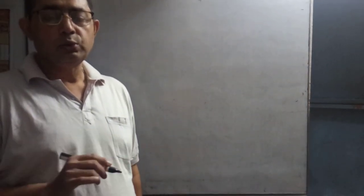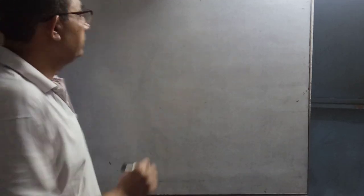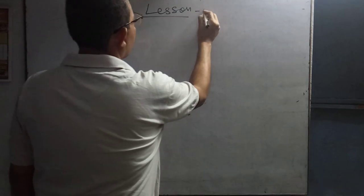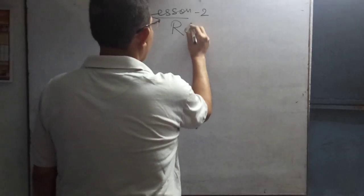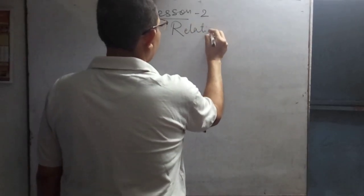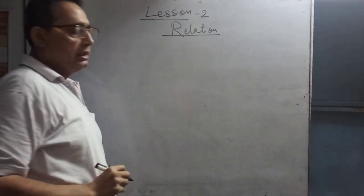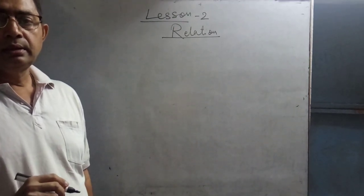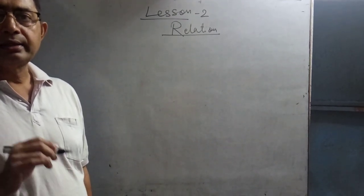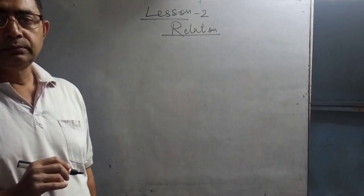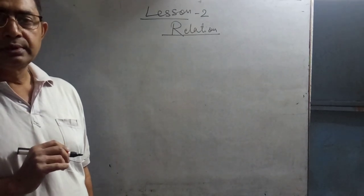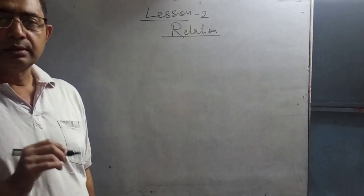Today we will start Lesson 2 on relations. In Lesson 1, we described the relation and the types of relation. First is reflexive, second is symmetric, third is transitive.